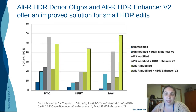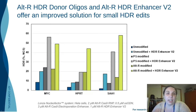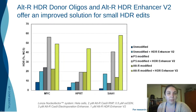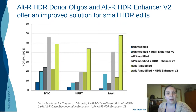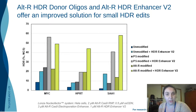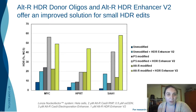Finally, the combined use of the Alt-R HDR donor oligos and the Alt-R HDR Enhancer V2 offers an improved solution for generating small HDR edits, particularly in challenging systems starting at one or two percent HDR. Starting with unmodified, untreated reagents showing 1–10% HDR in dark blue, adding the HDR Enhancer V2 gives a nice boost, and adding modifications to the donors further increases rates. With the combined approach, we achieve above 40% HDR in all cases tested.